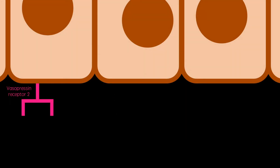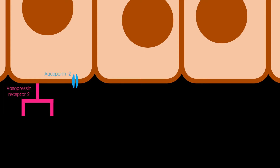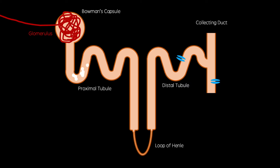Here, vasopressin acts on vasopressin receptor 2 molecules on cells of the proximal tubules and collecting ducts, causing them to express aquaporin 2 molecules on their cell surfaces. This allows water to become reabsorbed at these sections of the nephron rather than getting excreted as urine, preventing water loss when thirsty.